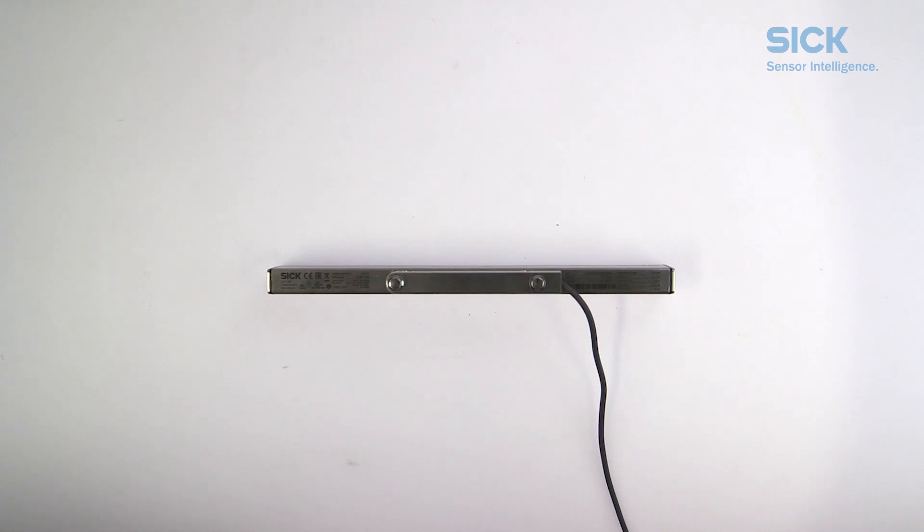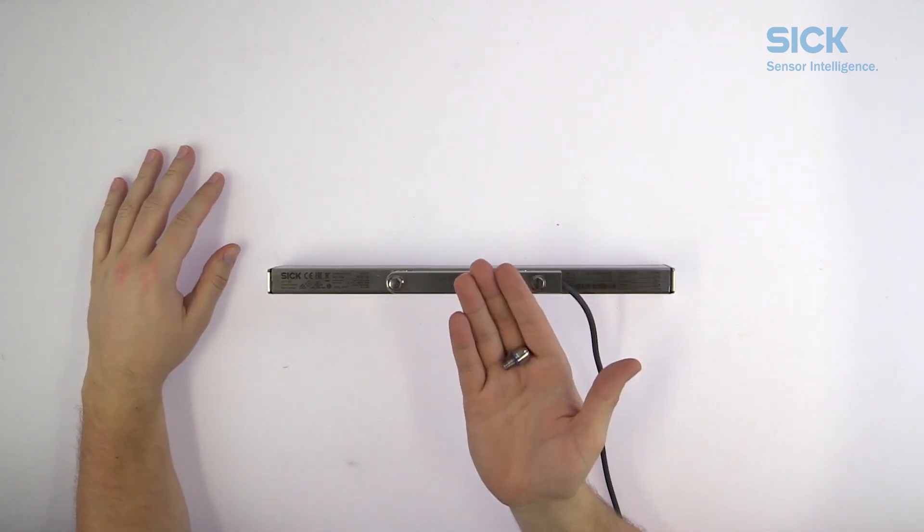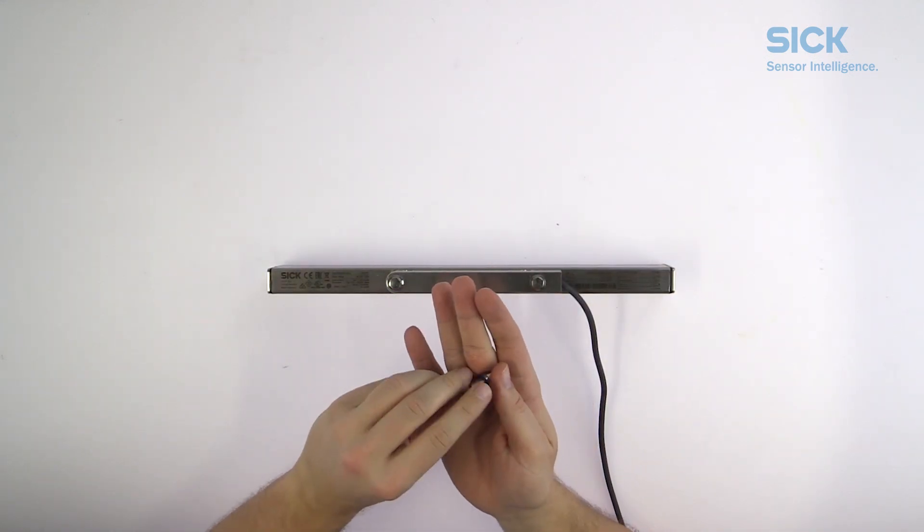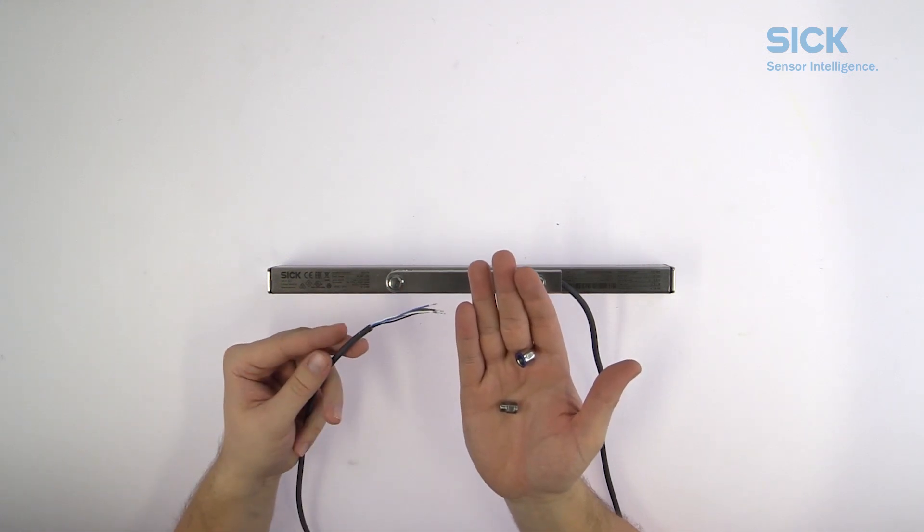There is one thing left to do in this step and that is tightening the cable gland until it is flush with the bracket case. Unscrew the cable gland and move the two parts separately. That makes it easier to attach it to the bracket base.